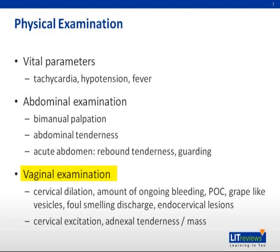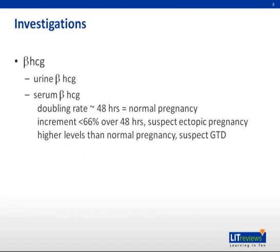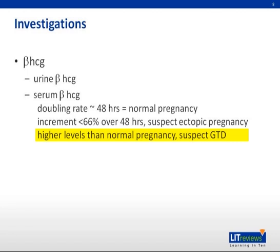Certain specific investigations should be performed to elucidate the etiologies of the bleeding. Serum beta-HCG classically doubles every 48 hours in a normal pregnancy. If the serum beta-HCG level is falling instead of rising, this likely indicates a spontaneous abortion or miscarriage. Conversely, if the increase in serum beta-HCG is less than 66% within 48 hours, suspicion of ectopic pregnancy should be entertained. If the serum beta-HCG is at much higher levels than expected in a normal pregnancy, gestational trophoblastic disease should be suspected.